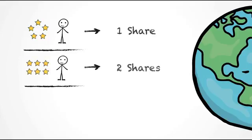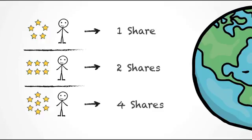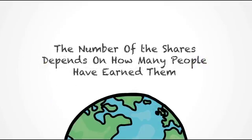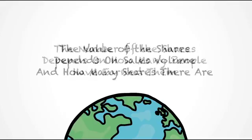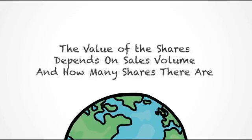At 6-star, they'll receive two shares, and at 7-star, they'll receive four. The number of shares is dependent on the number of people who are earning those shares. The value of the shares is determined by worldwide sales and the number of ways it's divided amongst those who have qualified for the leadership bonus.